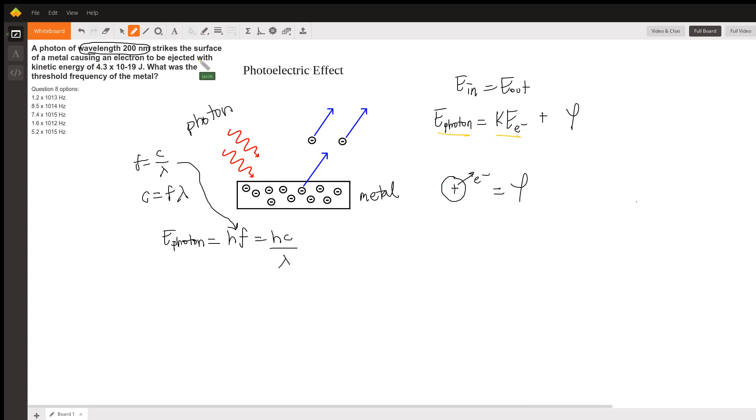Of course, we also know the kinetic energy of the electron because they tell us that. So we've got two parts down. Now, because we know both of those, we can figure out what this work function is. But the question doesn't ask us what the energy required to kick that electron off is.